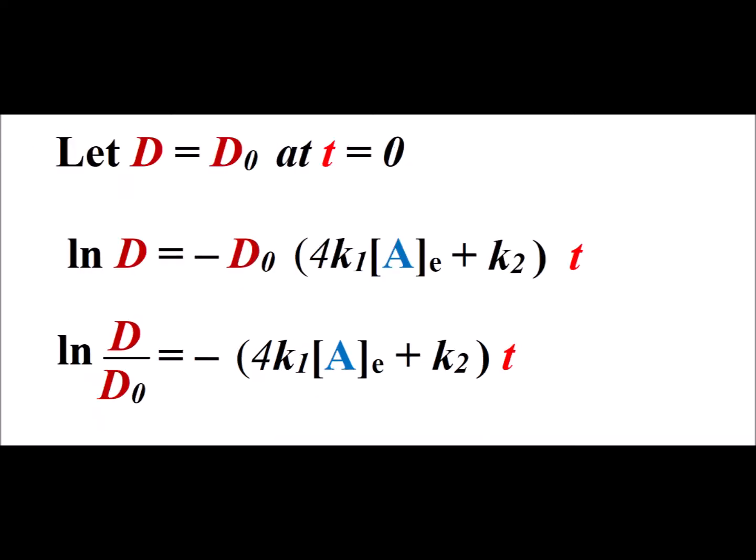Here we apply the initial condition that the value of the difference D at time t equals zero is equal to D sub zero. And we make use of the fact that we can separate variables D and t to get the solution for our differential equation.